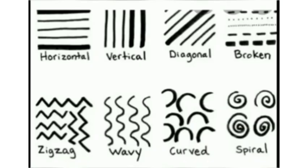These are the different types of lines: horizontal, vertical, diagonal, broken, zigzag, wavy, curved, and spiral. With these lines, you can make any type of pattern, design, or painting.